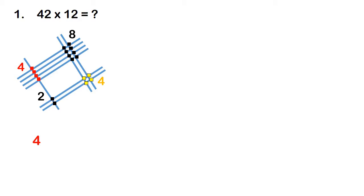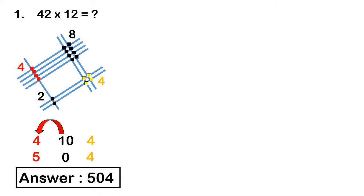The rightmost part gives totally 4 dots, so write 4 as it is. For the middle, 8 plus 2 equals 10 — so write 10. Since 10 has 2 digits, carry the 1 to the previous digit. So 4 plus 1 equals 5. Then write 0, then 4. The exact answer is 504.